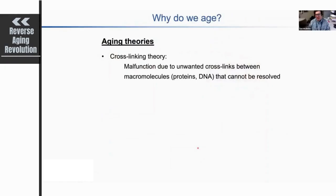There are a number of aging theories about why we age. Some of these have hints that each may play a role in the aging process. One of them is the cross-linking theory, which proposes that there are unwanted cross-links between various molecules that are unable to be resolved and increase over time.